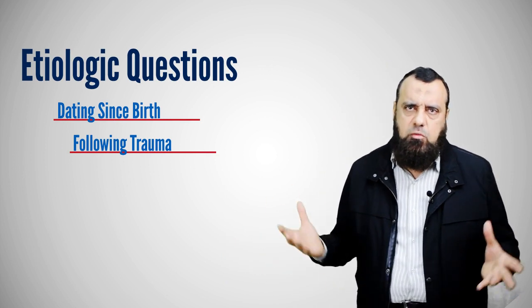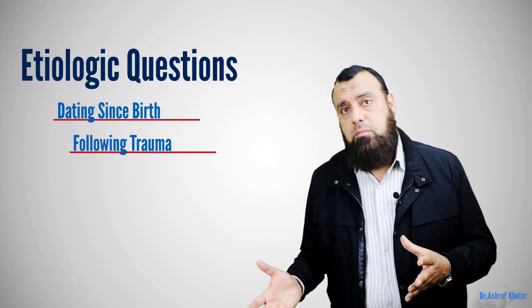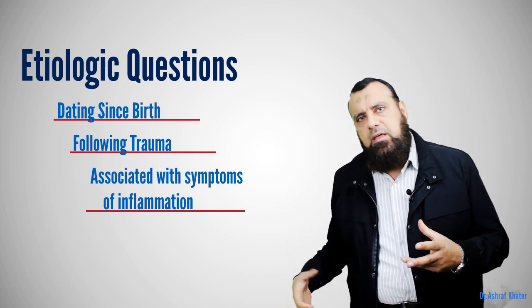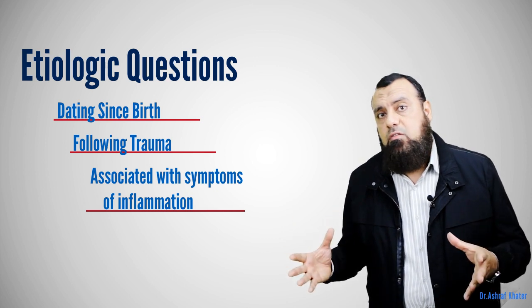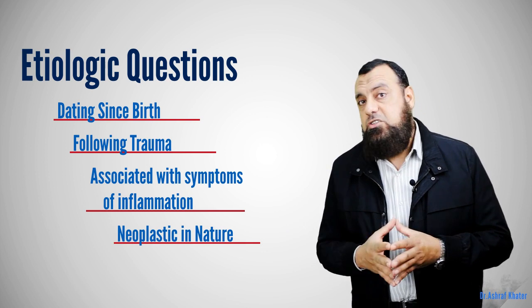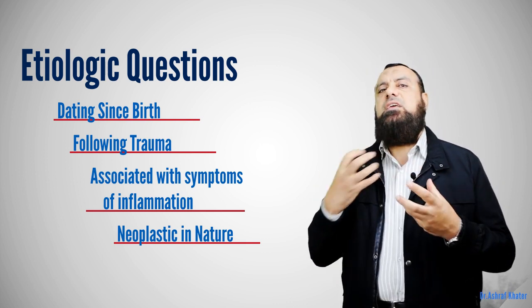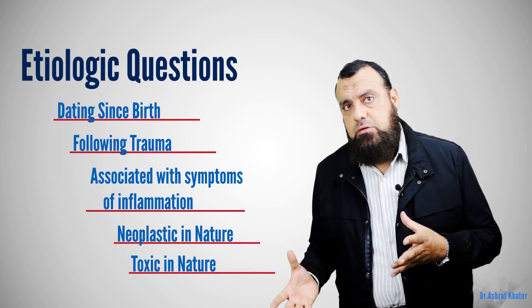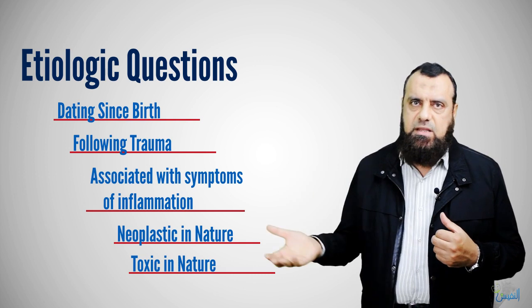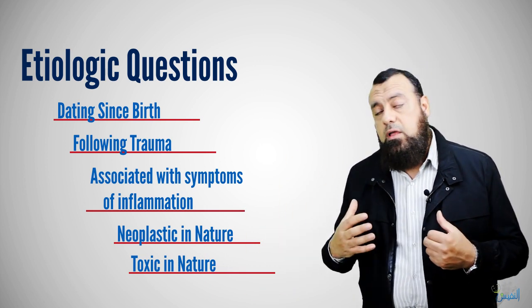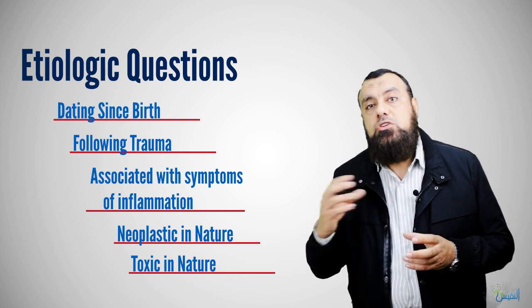Then we enter the etiological questions. Is it dating since birth? Is it following trauma, for example like a hematoma? Is it associated with symptoms of inflammation like fever, prostration, malaise, or localized pain? Is it neoplastic in nature — for example, a goiter with dysphagia, dyspnea, or change of voice as compression symptoms? Is it toxic in nature — with symptoms of thyrotoxicosis like heat intolerance, weight loss despite good appetite, palpitation, insomnia, or sweating?